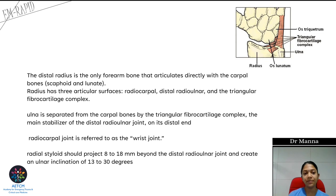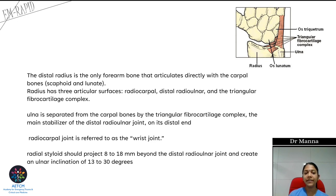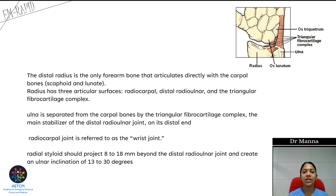First we will talk about the anatomy. The distal radius is the only forearm bone that articulates with the carpal bones — specifically the scaphoid and the lunate. The ulna will not articulate with any of the carpal bones. The radius has three articular surfaces: it articulates with the carpal bones, with the distal ulna, and with the triangular fibrocartilage complex.